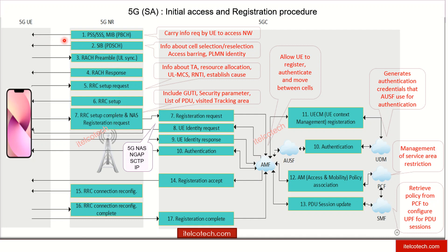Whenever a user has to connect to the network, in the downlink it will keep continuously getting information about the network through the synchronization signals and the broadcast channel. The synchronization signal helps to identify the central frequency of the particular telecom operator they have the SIM from. They will keep observing these synchronization signals to identify the center frequency, and once it is identified, synchronization will start.